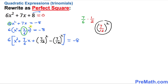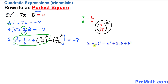Now focus on the part inside the parentheses that I am circling — this represents a complete square. We apply the well-known formula: (a + b)² = a² + 2ab + b². Using that formula, I can write 6(x + 7/12)², where x corresponds to a and 7/12 corresponds to b.